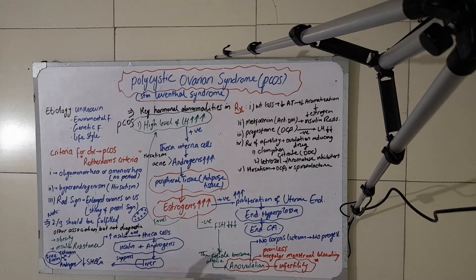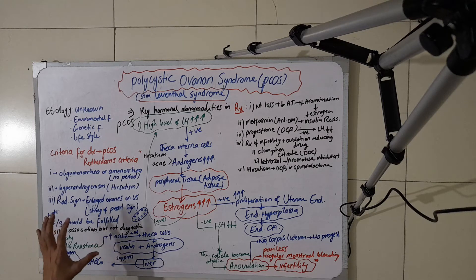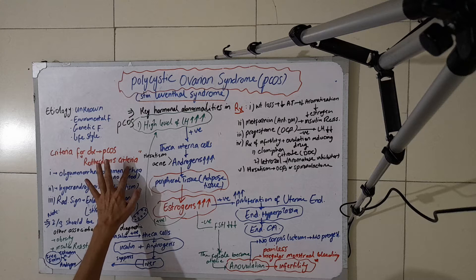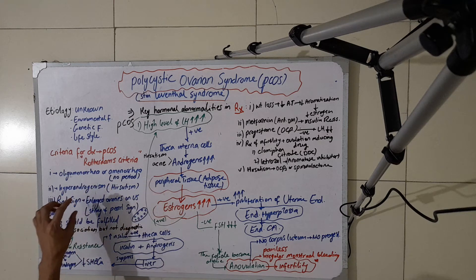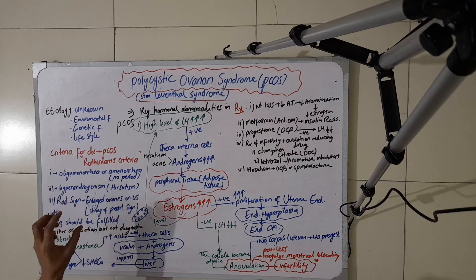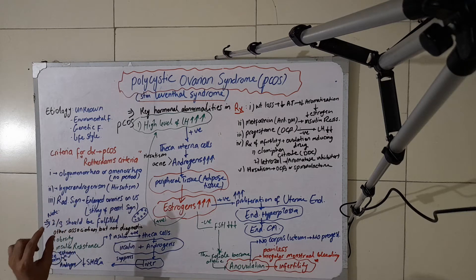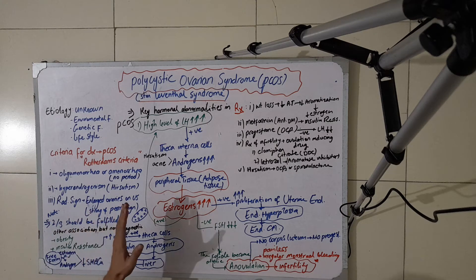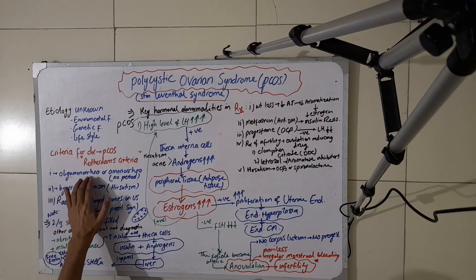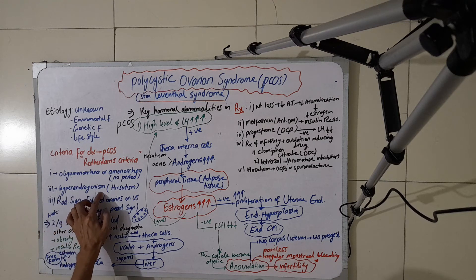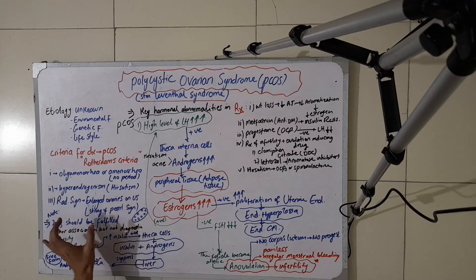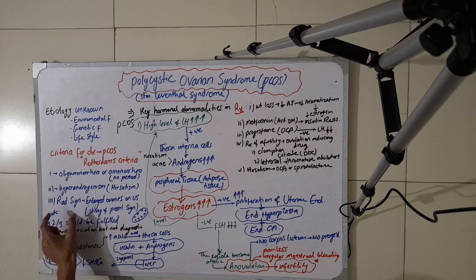Let us discuss the diagnostic criteria used to label a patient as having polycystic ovarian syndrome. These criteria are called the Rotterdam criteria. There are three main criteria; if two of these are present in a patient, we label her as having PCOS. The first criterion is oligomenorrhea or amenorrhea. The second is hyperandrogenism, which may present as hirsutism.